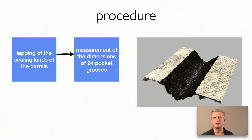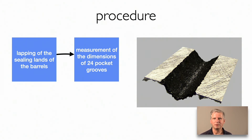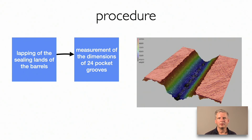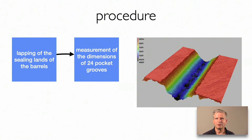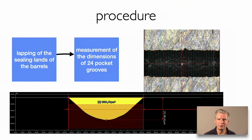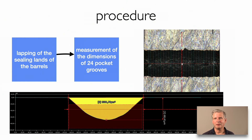After each lapping procedure, we measured the precise dimensions of all the grooves. We have 12 grooves in each barrel and 2 barrels, so in the end we need to measure 24 grooves in detail. Modern digital microscopes allow precise 3D measurements of design details like these grooves. The software of these microscopes also allows determination of the average width, average depth, and flow area of each groove.